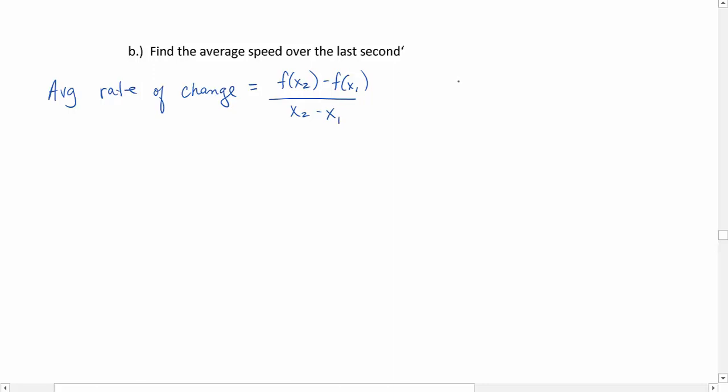The last second - we know it takes 10 seconds to hit the ground, so the last second would be between 9 and 10 seconds. So x₁ will be 9, x₂ will be 10. Then we need to find the corresponding y value. So f(x₁), that's f(9). Plugging it into our function f(x) = 160x - 16x², we get 144.